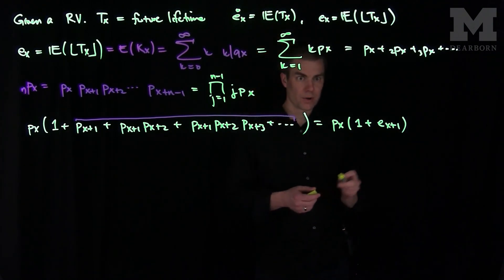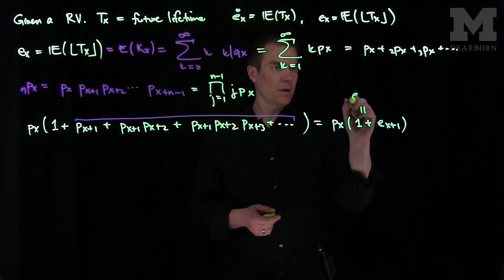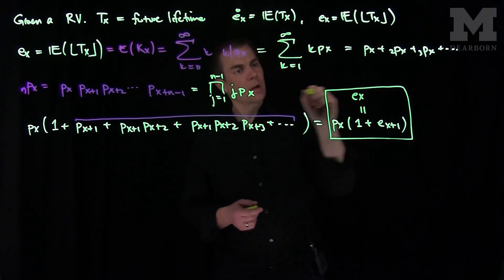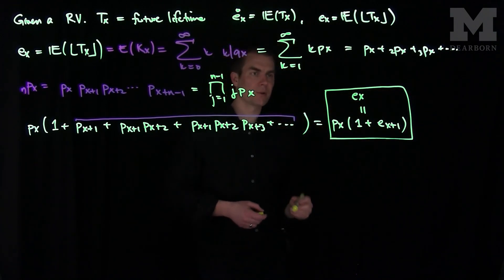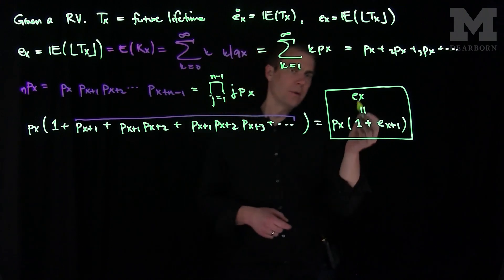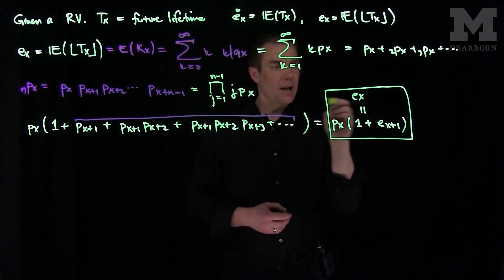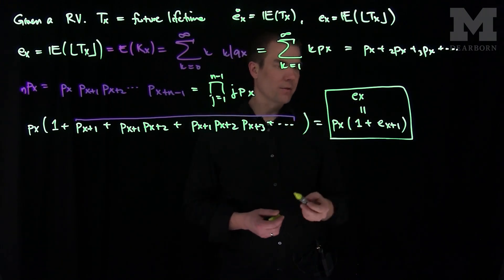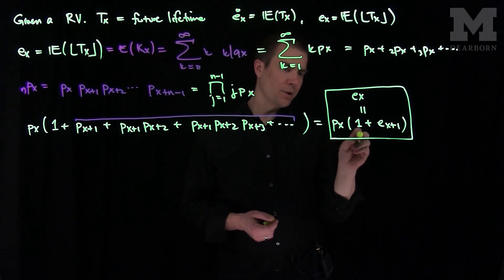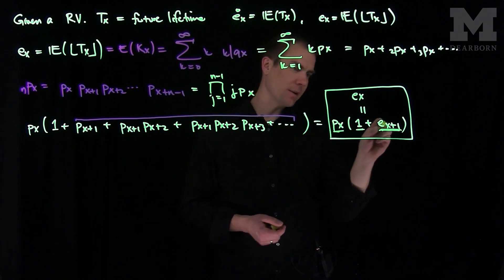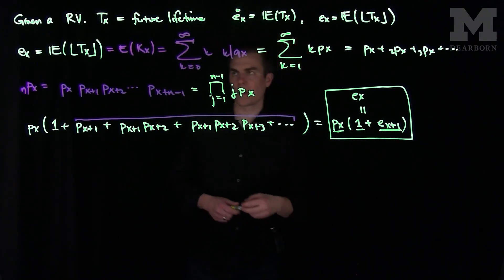So we have the recursion relationship: Ex equals Px times the quantity one plus Ex+1. This means we can advance one step into the future as long as we multiply by the probability of survival — the probability that a person aged x survives one year corresponds to the one, and then times the expected curtate lifetime for x+1.